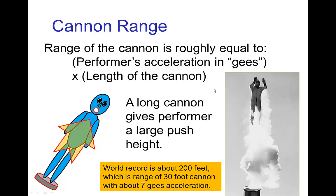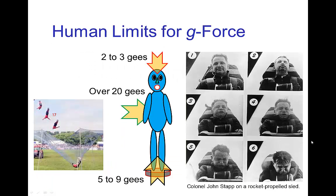The range is roughly equal to the acceleration measured in g's — where g is the acceleration of gravity — times the length of the cannon. The world record for human cannonball is roughly 200 feet, which is what you get for a 30-foot cannon if the performer is accelerated at about 7 g's. That's roughly the limit because the human body has limits on what it can withstand in terms of g-force. The average person would black out accelerated at about 5 g's; professional trained individuals can reach up to 7 g's, and fighter pilots in special suits can get up to around 9 g's.